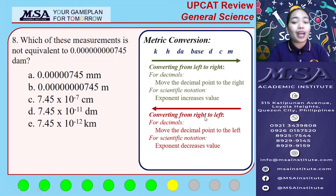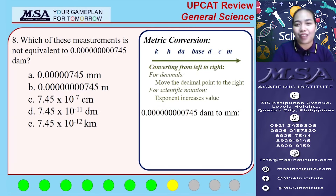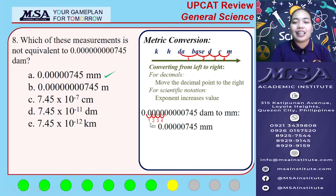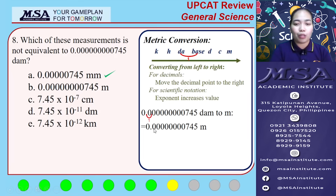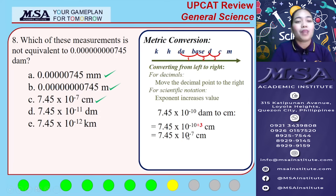When converting from right to left in scientific notation, we decrease the exponent value. Now let's convert our given. Converting decameters to millimeters, we move four decimal places to the right — letter A is equivalent to our given. Converting decameters to its base unit is one step to the right — letter B is also equivalent. For the conversion of decameters to centimeters, we increase the exponent value by three — letter C is also equivalent.